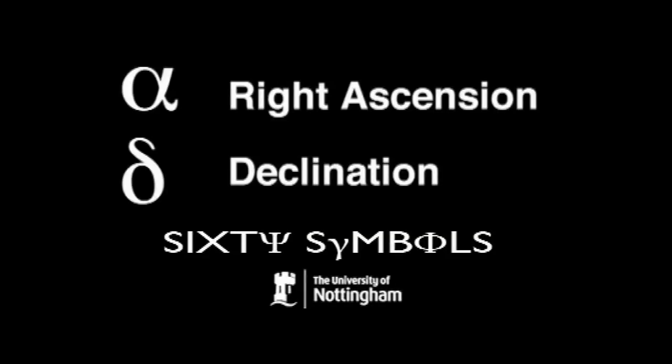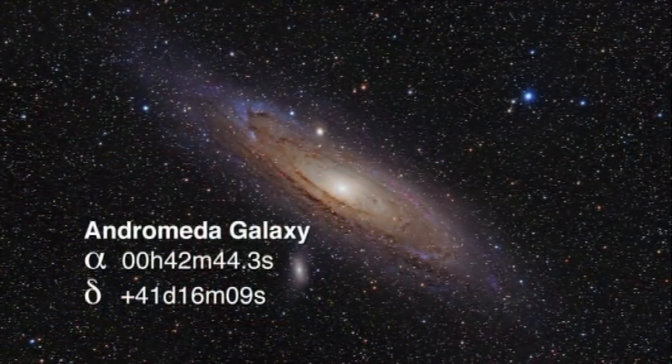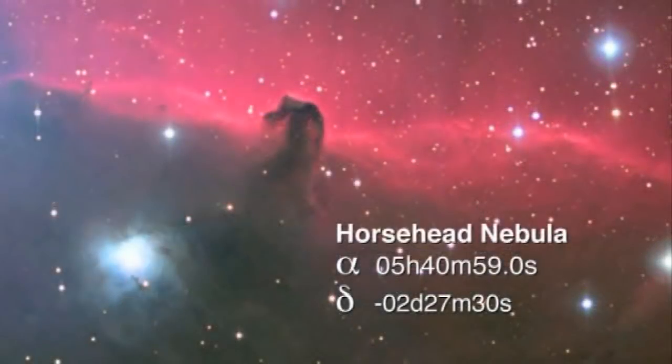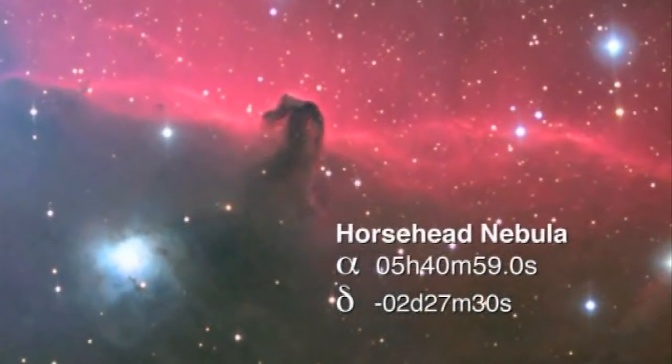I thought I'd talk about two symbols that go together: alpha and delta. Both these symbols are used for lots of different things, but when you see them together, at least as an astronomer, it usually means you're measuring the coordinates of something — measuring where something is on the sky. That's rather important to astronomers, because if you want to point your telescope at a particular object, you need to know what direction to point it in. These are the coordinates we use for measuring the positions of things on the sky — two numbers measuring two angles to tell you where to look, what direction to point your telescope in.